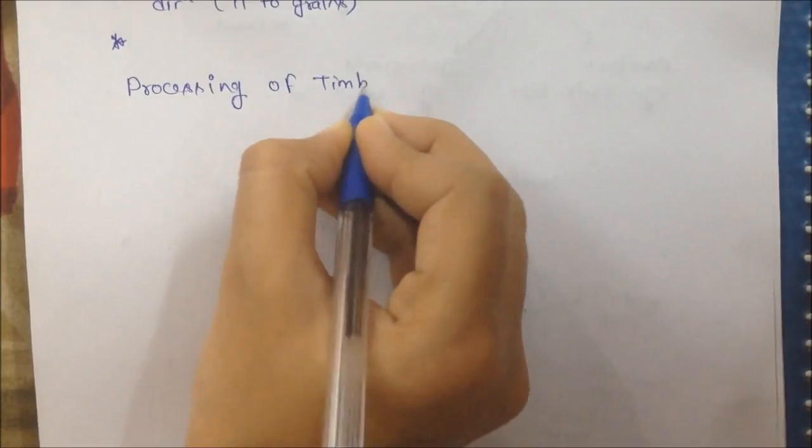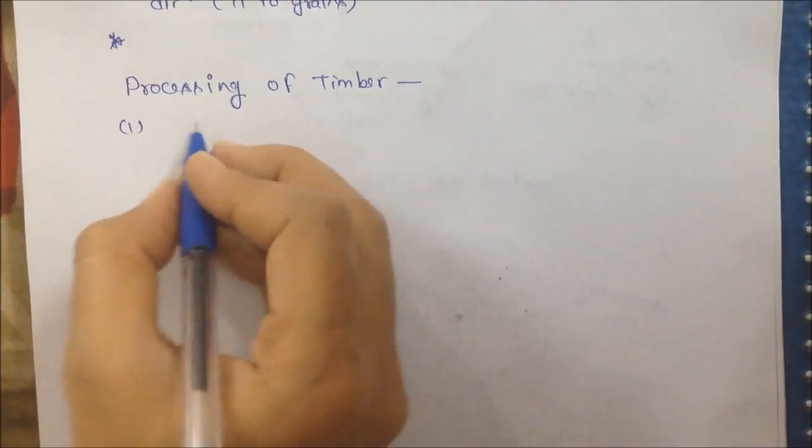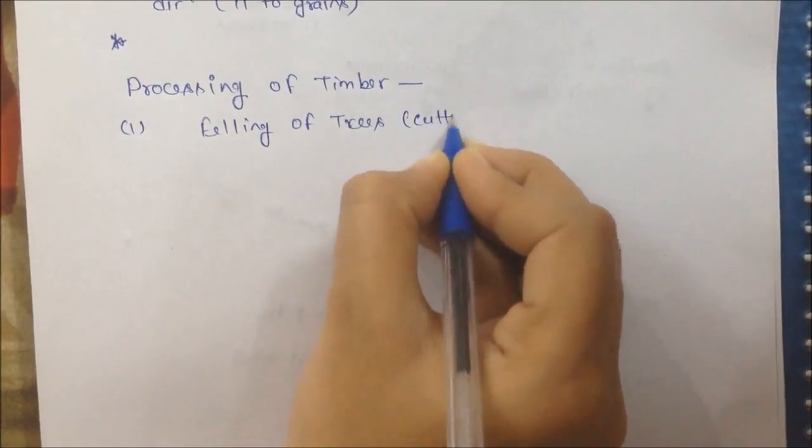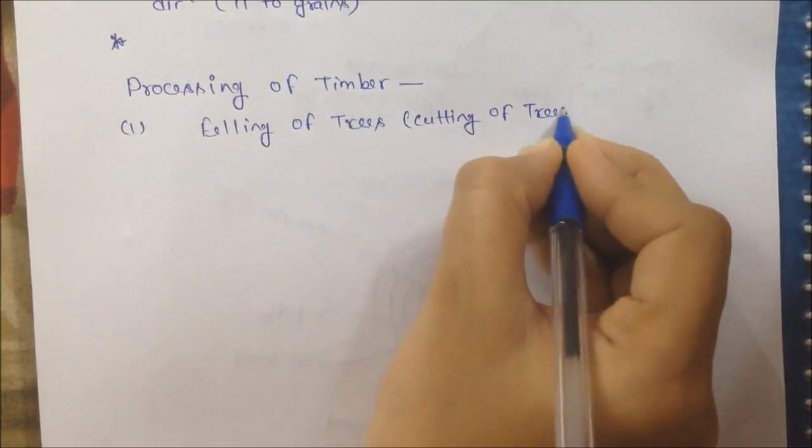Next is processing of timber. We carry out some process to make timber useful for engineering purpose. First is felling of trees or cutting of trees. We cut the trees in matured areas. If the tree is over matured, then it will decay.